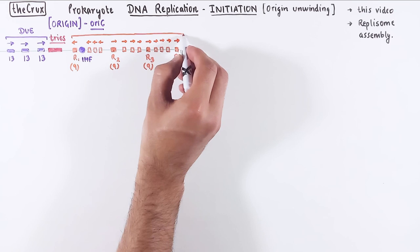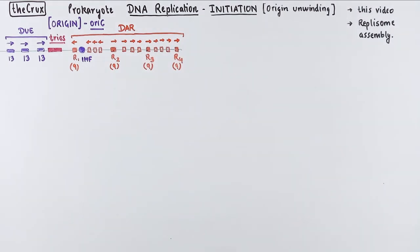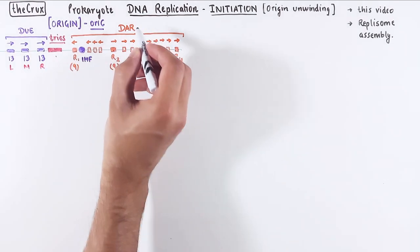And starting from the R1 until the R4, this entire section is called DNA assembly region. So the main parts of the origin are these LMR repeats in the DUE region, and then the trios region, and then the DAR.